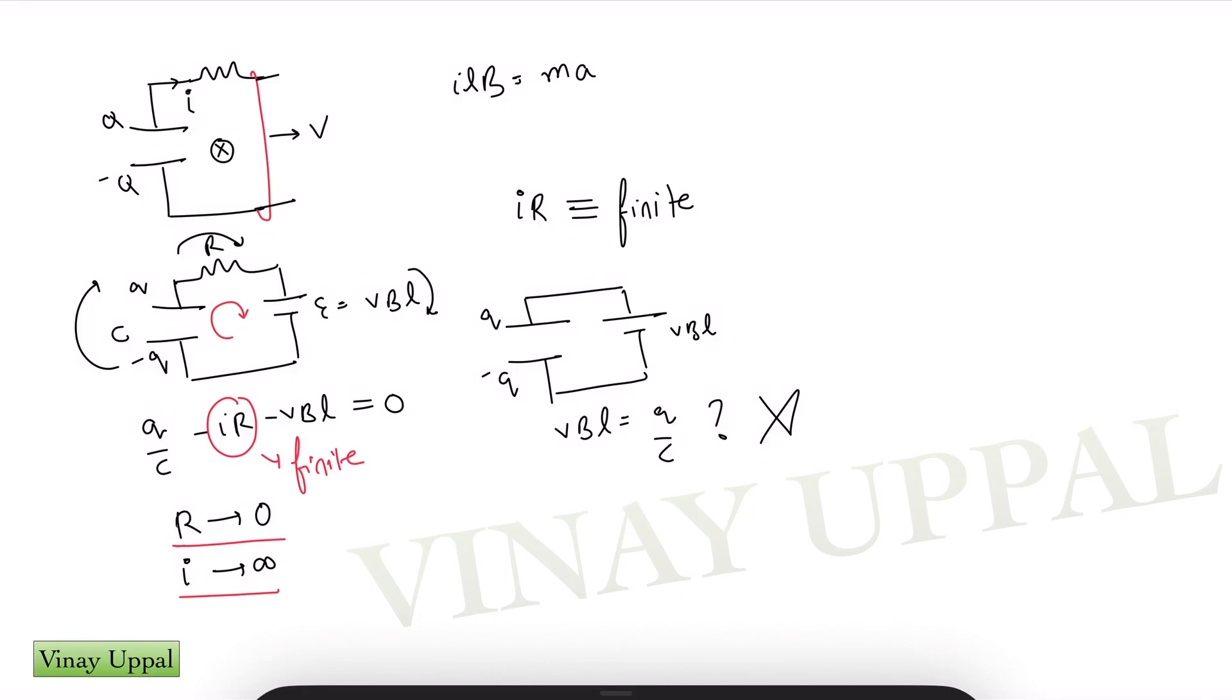So what is going to happen in that short interval of time is the potential across the capacitor is going to decrease as the charge decreases as it discharges. And as the rod keeps on accelerating, the velocity will increase. And therefore, the EMF across the rod will keep on increasing at the instant when they become equal to each other. When Q by C becomes equal to V B L, you will have steady state because from the loop law, you can see that the term of I R will become zero. When Q by C is equal to V B L, I R is zero. And that means current itself is zero. And that means we have reached steady state.